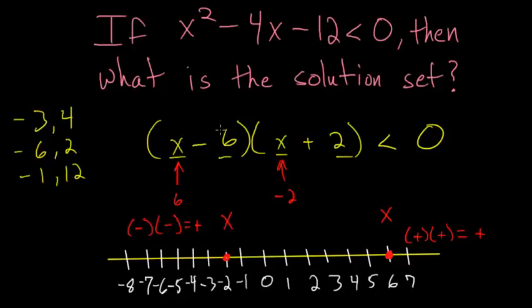We'd have 0 minus 6 times 0 plus 2, or negative 6 times 2. So we'd have a negative number times a positive number which we know is negative. So the only numbers that would give us a result less than 0 are between negative 2 and 6.